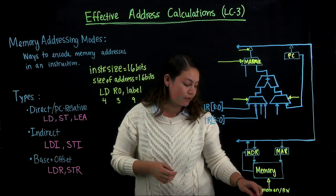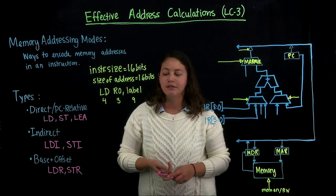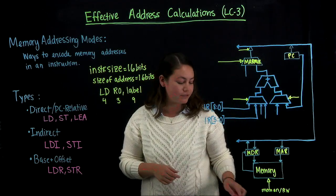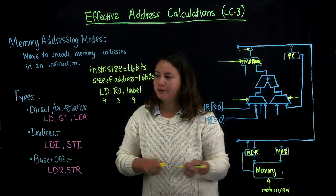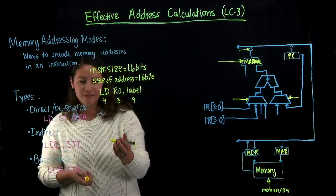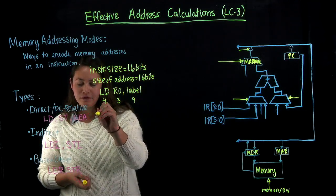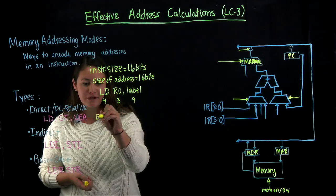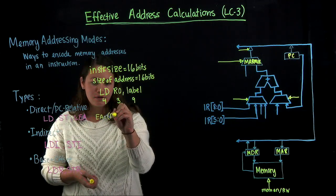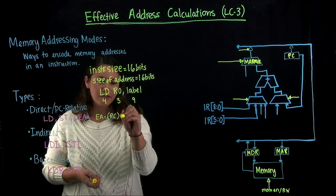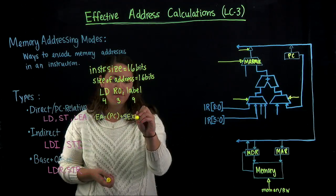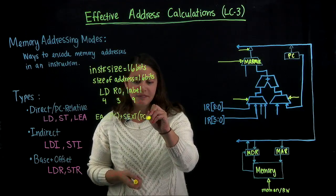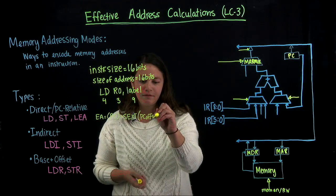So before we go over the address calculations for these memory addressing modes on the data path, let's write out the effective address for each of these types. So for direct or PC relative, we're going to have an effective address of the contents of the PC plus the sign extended PC offset 9.